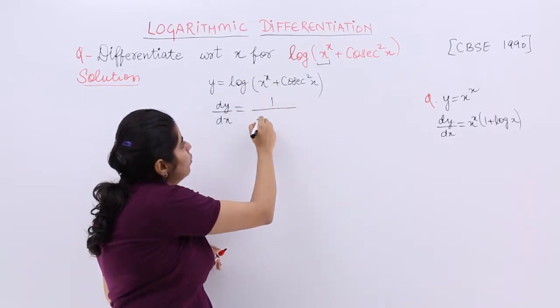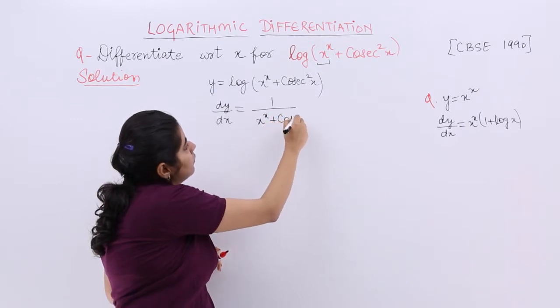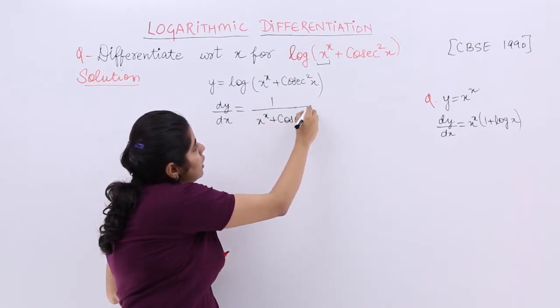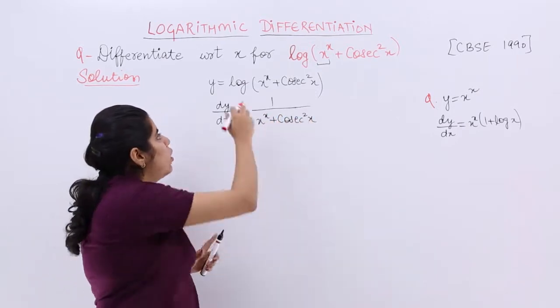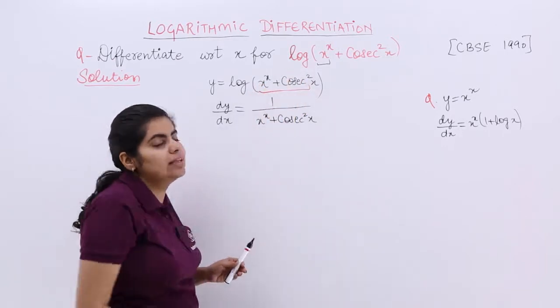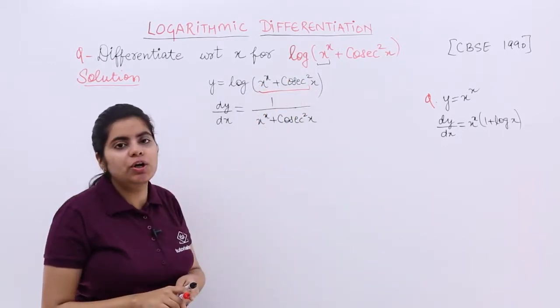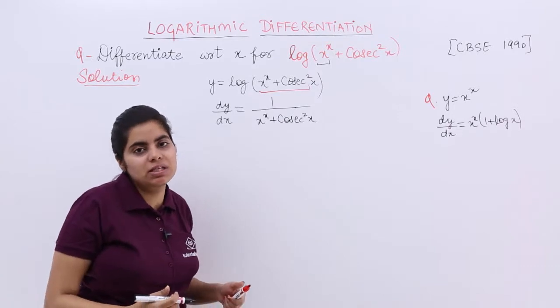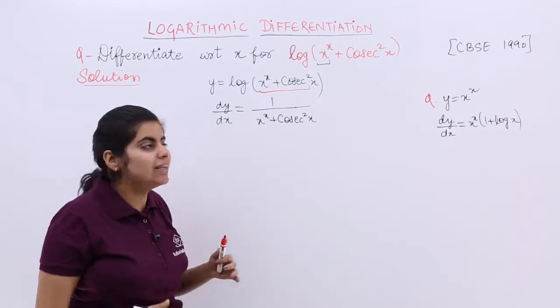So log is there, differentiation is 1 upon the whole thing. But you see the chain rule. When log of something is there, you take 1 upon that thing. But inside also you have x^x + cosec²x. So you have to differentiate that also.